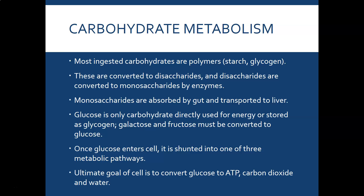Amylase breaks polymers down into disaccharides, which are two sugar molecules. An example would be sucrose. Those disaccharides are then converted to monosaccharides by enzymes — for sucrose, the enzyme would be sucrase, breaking it down into the two monosaccharides fructose and glucose.